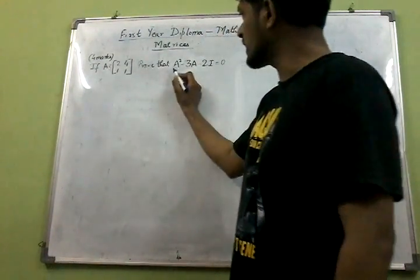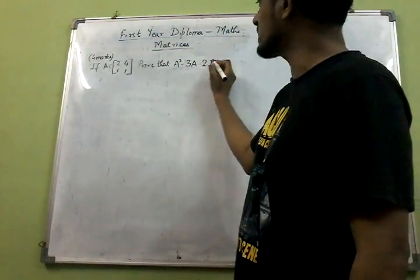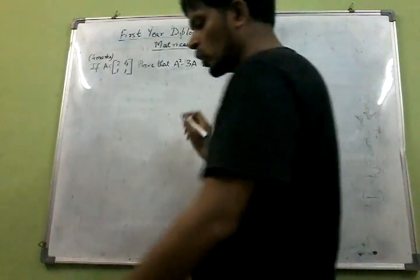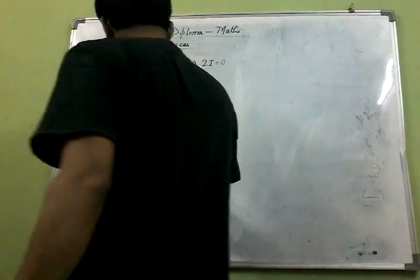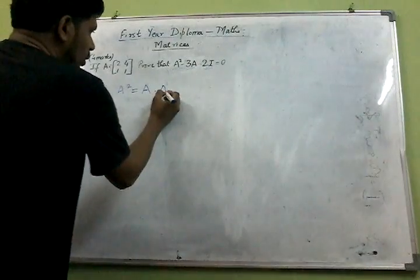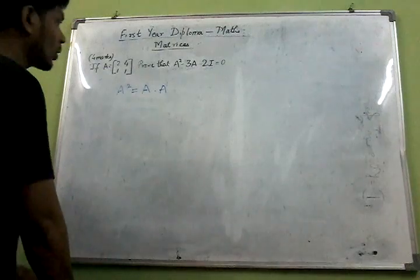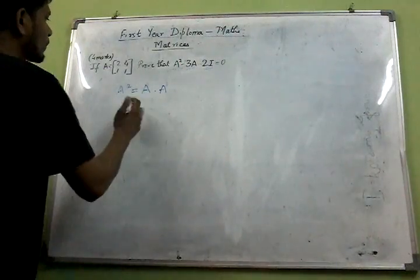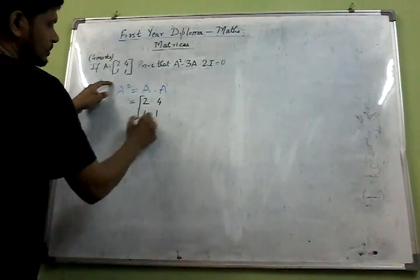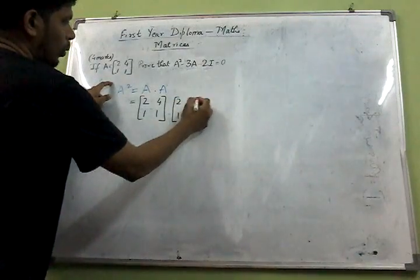First we have to find A squared, then we need to find 3 into A, and then we need to find 2 into I. Let us start with A squared. A squared is equal to A into A, so we need to multiply A with A. So A is the matrix with elements 2, 4, 1, 1 multiplied by itself: 2, 4, 1, 1.